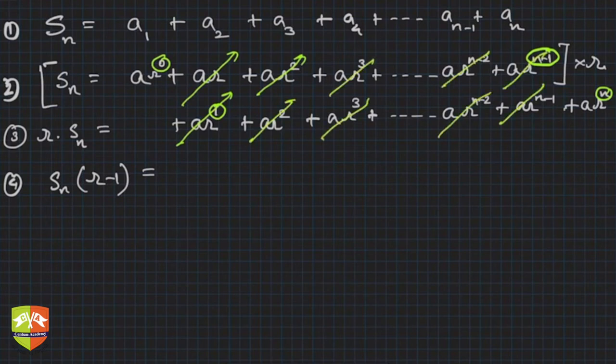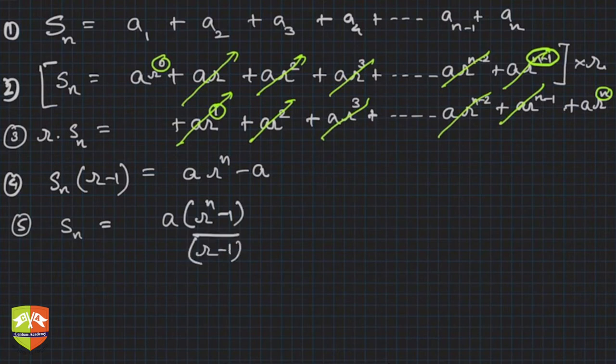What is left? Left only will be ar^n minus a. Correct? So fifth: Sn is nothing but a(r^n - 1)/(r-1). Got it?